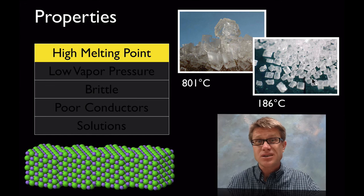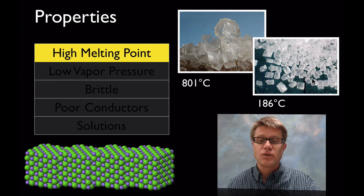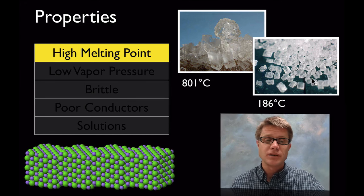Its melting point is 801 degrees Celsius. If we look at sugar which looks the same but is held together with covalent bonds, it's going to have a much lower melting point.